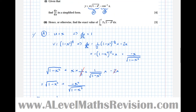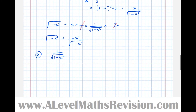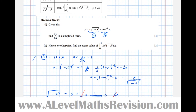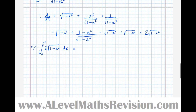Putting it all together, dy by dx equals √(1 − x²) − x²/√(1 − x²) minus (−1/√(1 − x²)). Now notice: we've just differentiated y = x√(1 − x²) − arccos x to get this expression, so if we integrate the expression we must get back to x√(1 − x²) − arccos x.